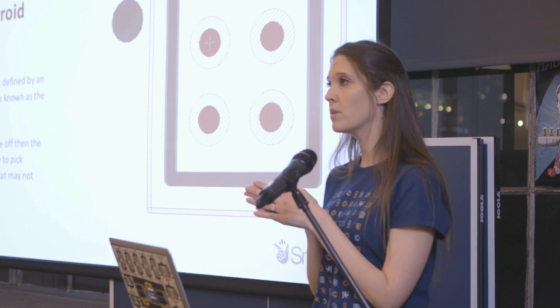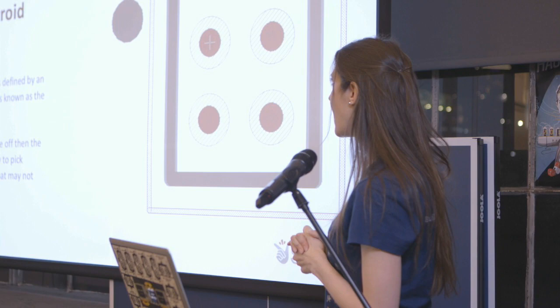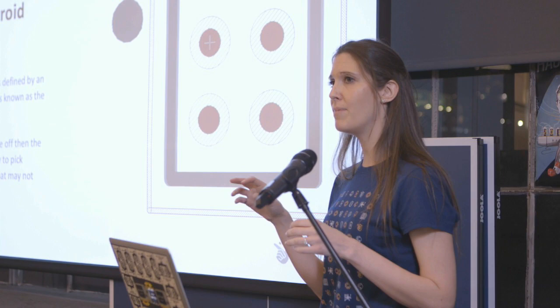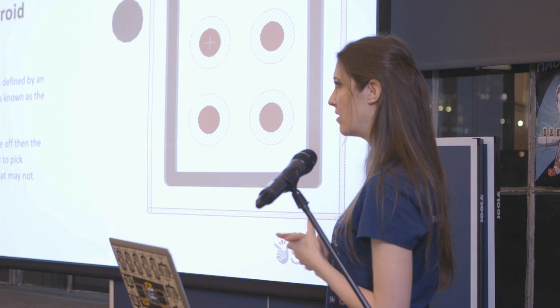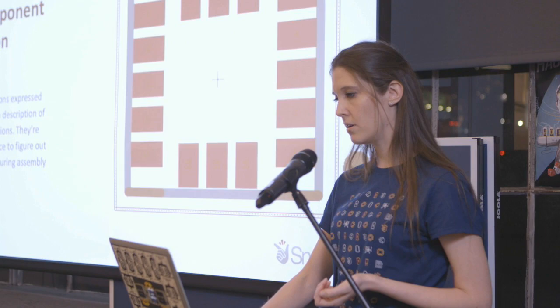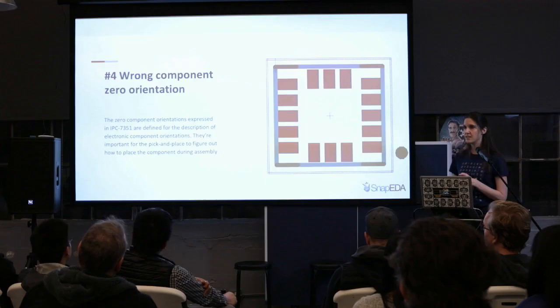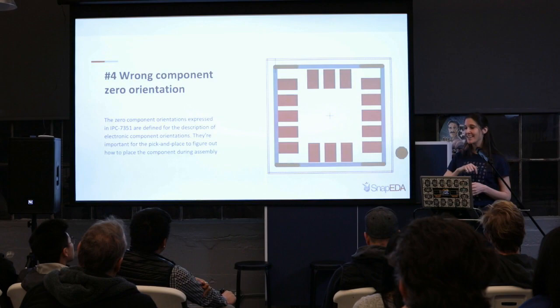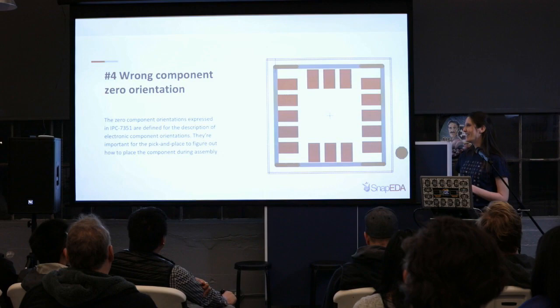Another error is wrong centroid. You need to make sure your centroid is defined at the center of mass of the component. Some tools define it as pin one, but that can cause issues with the pick-and-place machine and add cost to your assembly process. Also: wrong component zero orientation. As defined by IPC, it should be top left — but that's actually changing in IPC 7351C. That's what I mean by the changing standards — they're changing constantly.